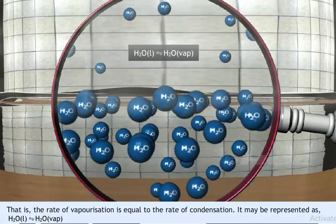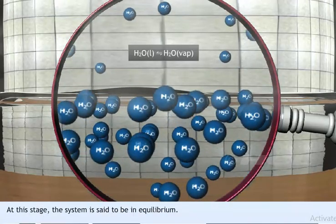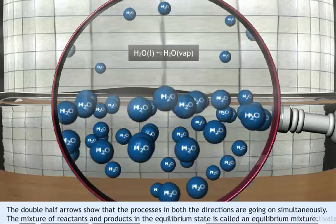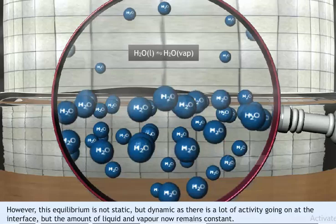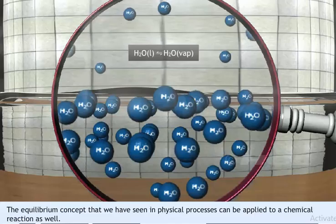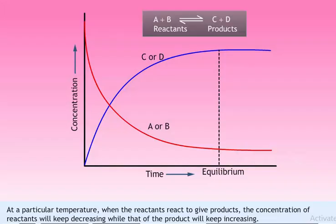That is, the rate of vaporization is equal to the rate of condensation. It may be represented as H2O (liquid) ⇌ H2O (vapor) in a reversible reaction. At this stage, the system is said to be in equilibrium. The double half arrows show that the processes in both directions are going on simultaneously. The mixture of reactants and products in the equilibrium state is called an equilibrium mixture. However, this equilibrium is not static but dynamic, as there is a lot of activity going on at the interface, but the amount of liquid and vapor remains constant.